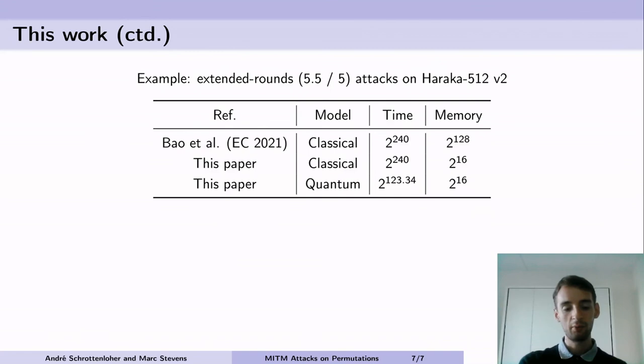Now in our paper we don't reduce this time complexity but we show that with a different characteristic we could reduce the memory down to 2 to the 16 which is very small. With the same characteristic it becomes also possible to run a quantum attack which is going to run in basically the square root of the time complexity with some additional factors, so 2 to the 123.56 applications of Haraka as a quantum circuit and the same memory complexity.